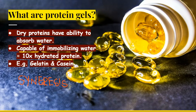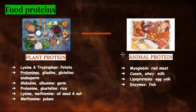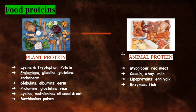Next we have food proteins. Food proteins are proteins present in animals or plants — plant proteins and animal proteins. Examples of plant proteins: lysine and tryptophan are present in potato; prolamines, gliadins, and glutelins are present in endosperm; globulins and albumins are present in germ; prolamine and glutelins in rice; lysine and methionine in oilseed and nuts; and methionine in pulses. For animal proteins: myoglobin is present in red meat; casein and whey in milk; lipoprotein in egg yolk; and fish contains various enzymes.